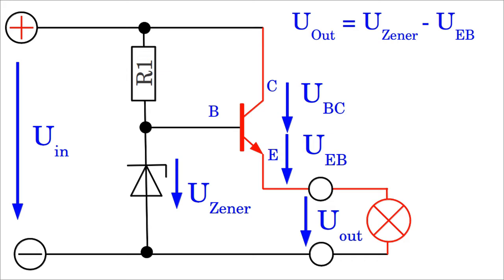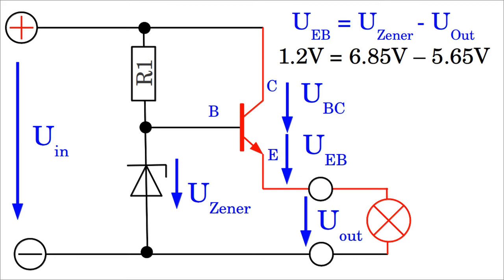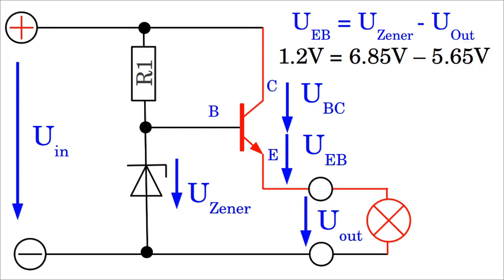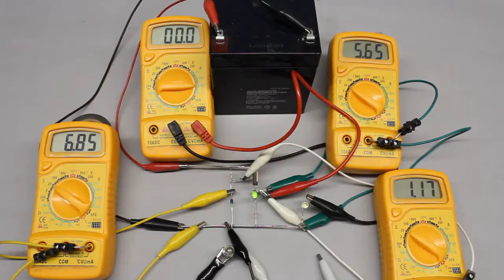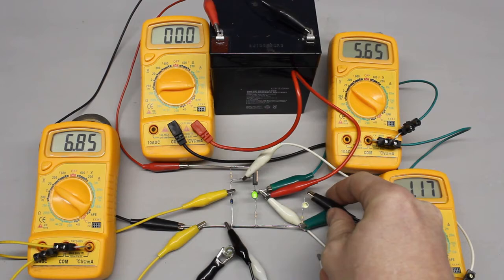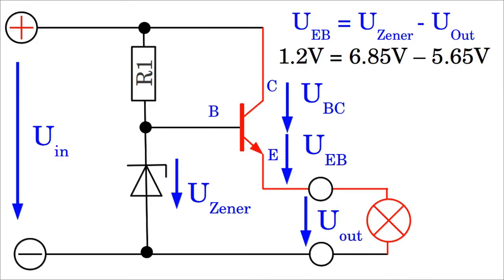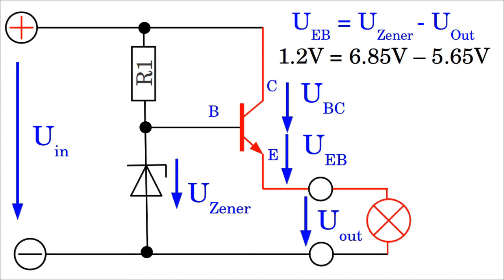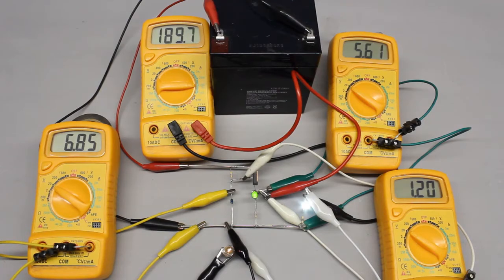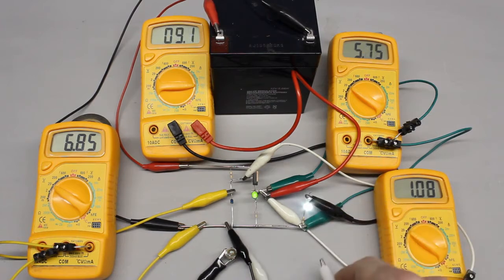It is also independent from the resistance of the load. Whenever the resistance of the load is decreasing, the output voltage across the load is decreasing too, resulting in an increasing voltage between emitter and base. However, with increasing emitter-base voltage, the resistance of the transistor's emitter-collector line is decreasing, resulting in an increasing output voltage. The feedback loop of the circuit counterbalances the falling voltage caused by a decreasing resistance of the load. On the other hand, if the resistance of the load is increasing, the emitter-base voltage is decreasing, causing an increasing resistance of the emitter-collector line, which is counterbalanced by a decrease of the transistor's resistance.